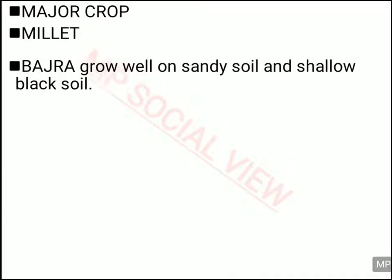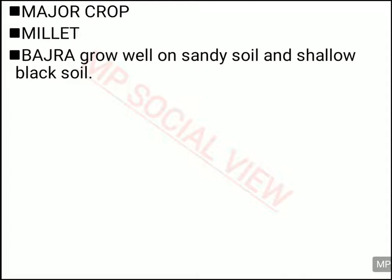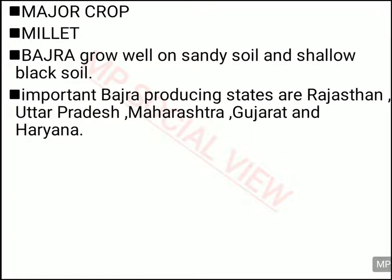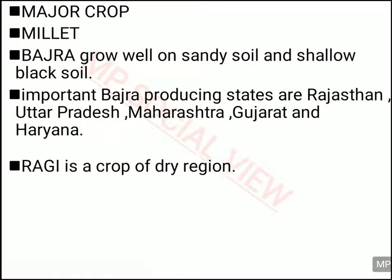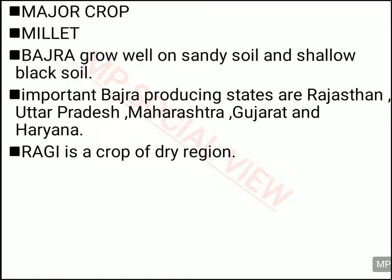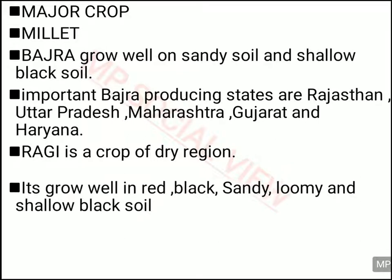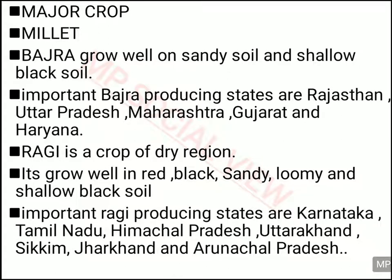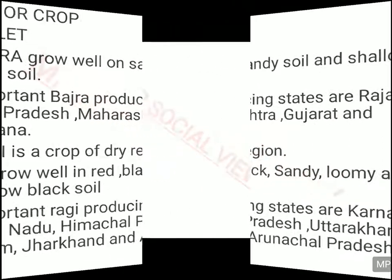The second major millet crop is Bajra. It is grown in sandy and shallow black soil, and states like Rajasthan, Uttar Pradesh, Maharashtra, Gujarat and Haryana are good for growing Bajra. Ragi is the third important millet crop; it can be grown in a dry region in red soil, black soil, sandy soil, loamy soil and shallow black soil. States famous for producing Ragi are Karnataka, Tamil Nadu, Himachal Pradesh, Uttarakhand, Sikkim, Jharkhand and Arunachal Pradesh.